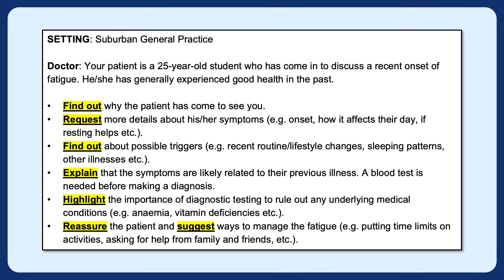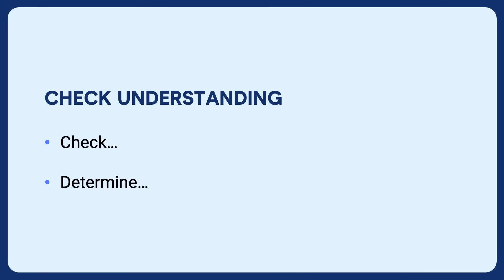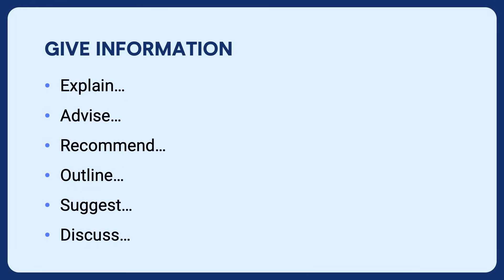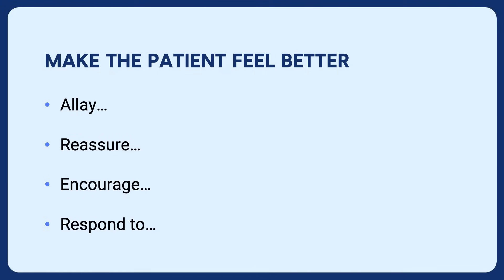So just to summarize: on your roleplay card will be tasks, and these tasks have key functions indicated by key verbs. You might have to request information — find out or ask. You might have to check understanding — check or determine. You might have to give information — explain, advise, recommend, outline, suggest and discuss. You might have to change the patient's mind — persuade, emphasize, stress, reinforce, promote, convince and express concern. And you might have to make the patient feel better — allay, reassure, encourage and respond to.